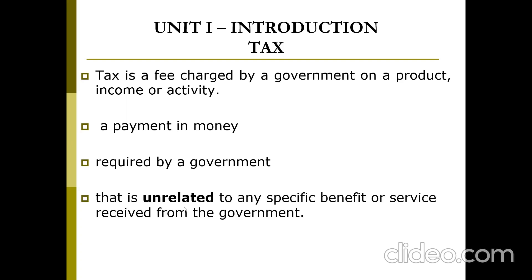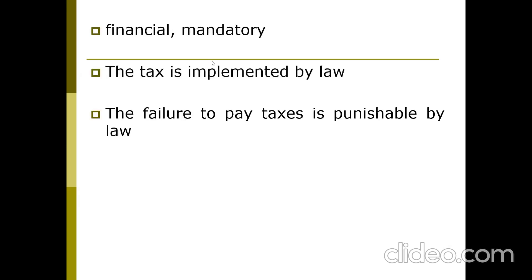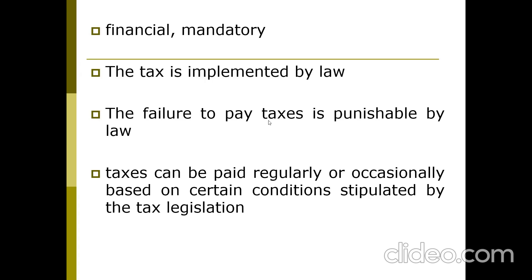Those who pay tax directly may not get direct benefits, but the society at large benefits from the taxpayer — that is what you mean by unrelatedness. Tax is financial and mandatory; it is a compulsory payment implemented by law. If a person fails to pay tax, it is a punishable crime. The government will punish that person, by imposing a fine or, for a serious offence, by putting the person in prison.